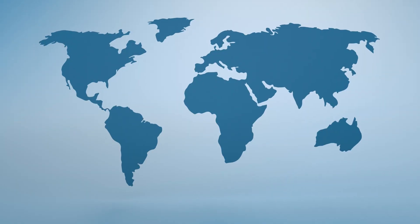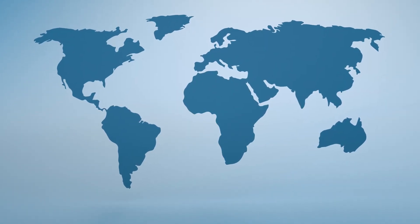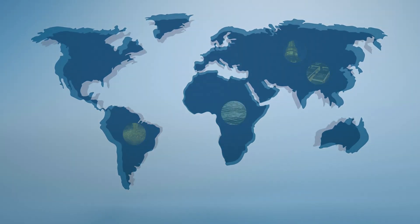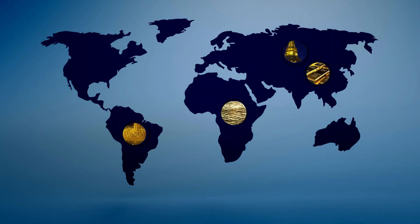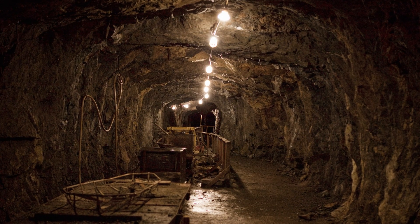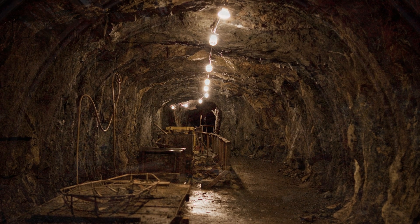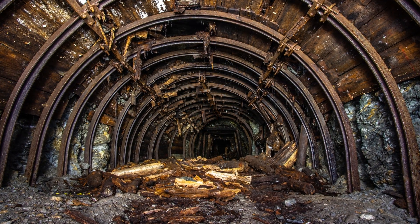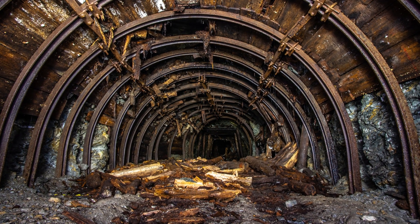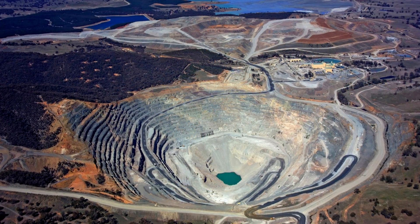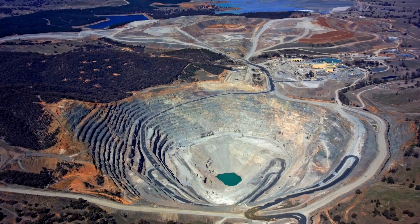Gold is found all over the world, with some of the largest gold deposits located in countries like South Africa, China, Russia, and the United States. The purest gold comes from South Africa, where gold is found in the form of nuggets or veins. This is due to the country's long history of gold mining and its unique geology.